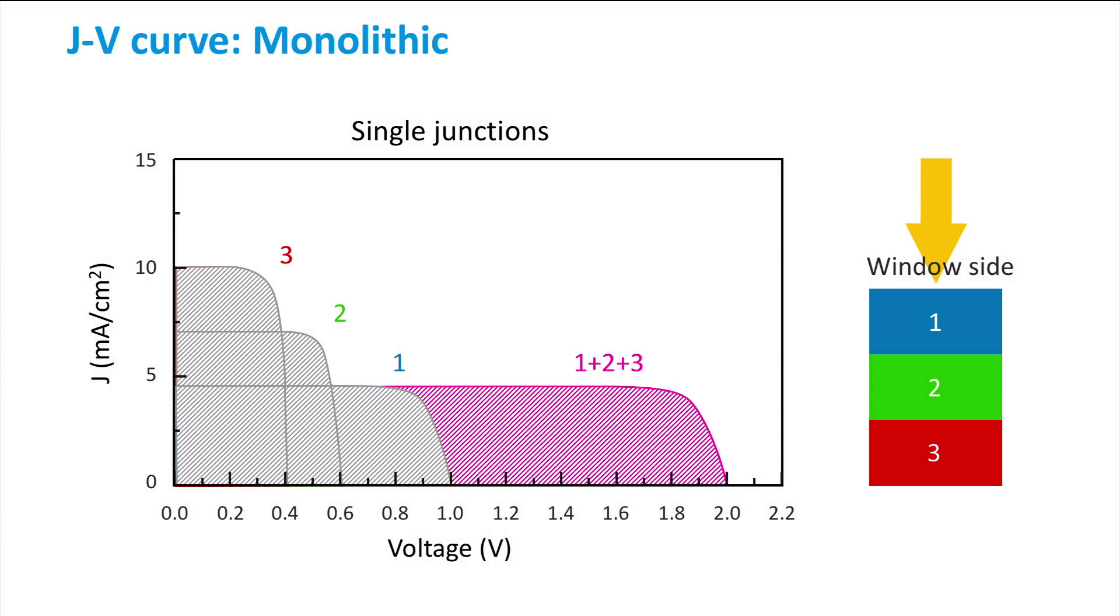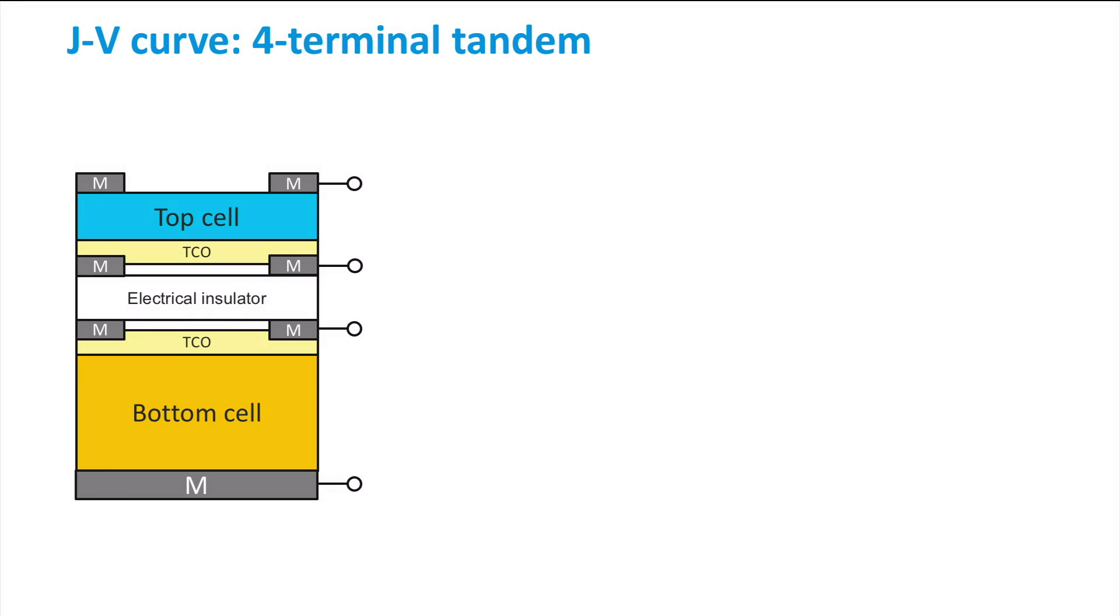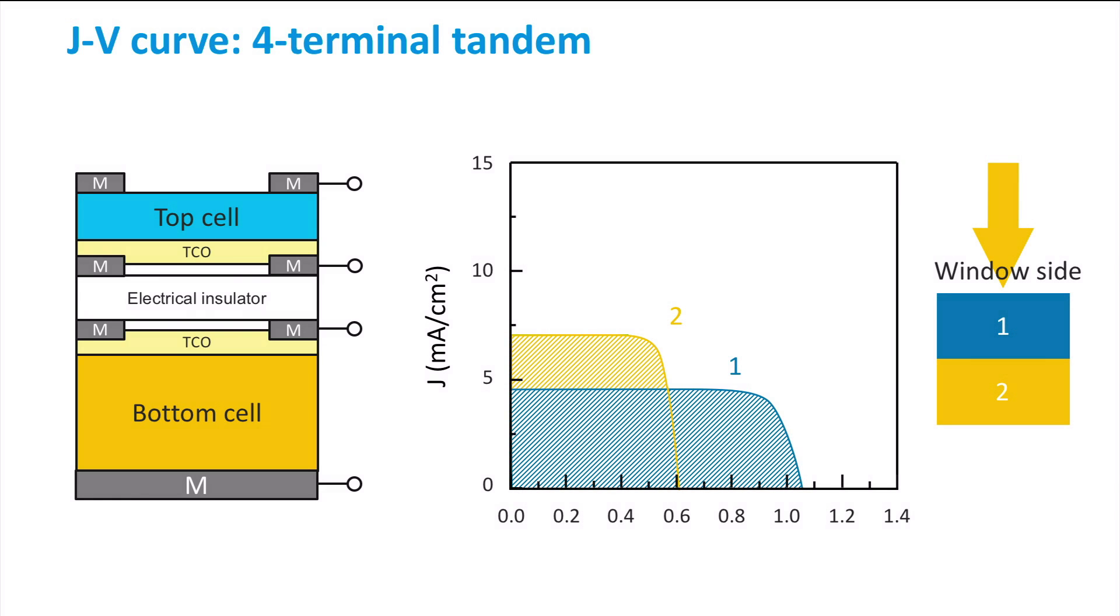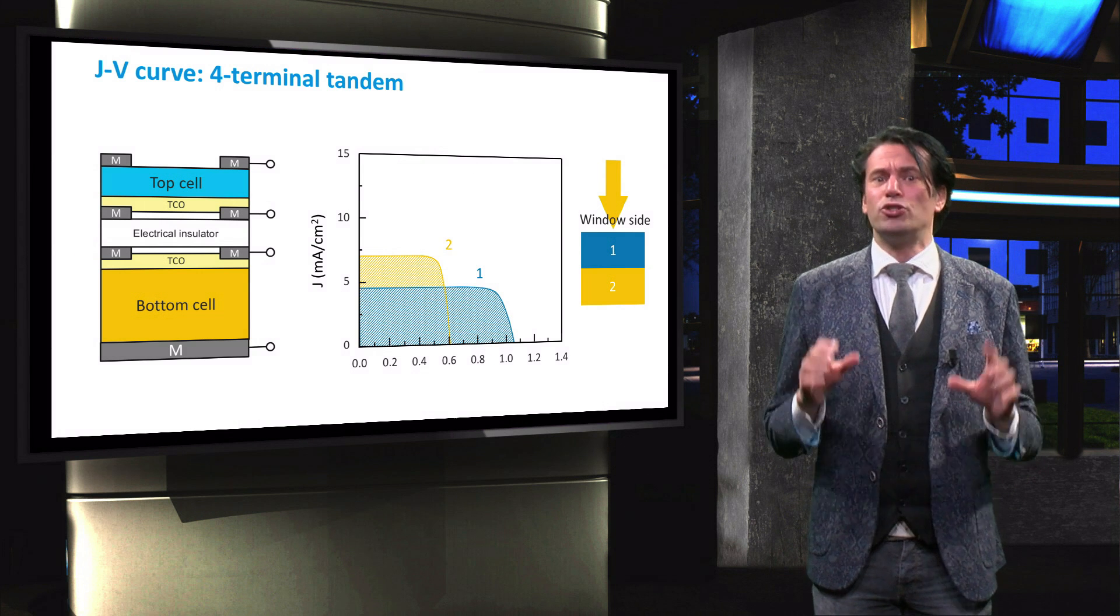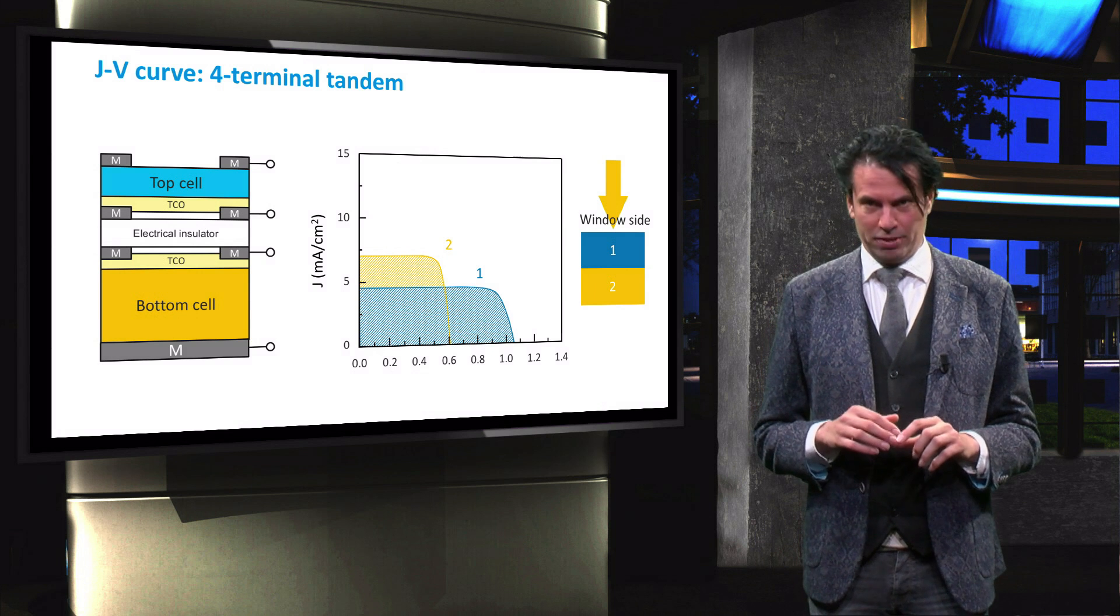Another important advantage of the four terminal approach can be illustrated by this familiar figure. This figure shows the current of a two terminal multi-junction device is limited by the sub-cell with the lowest current. Current matching is therefore very important for these devices. However, in a four terminal device each cell can operate at its own maximum power point because each cell has its own terminals. Consequently, there is no need for current matching in a four terminal tandem device.